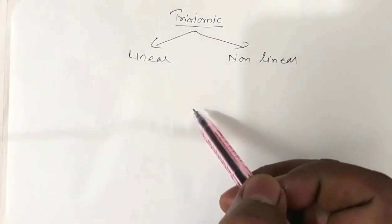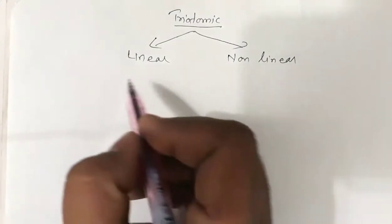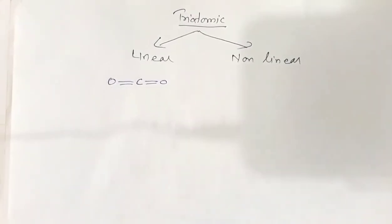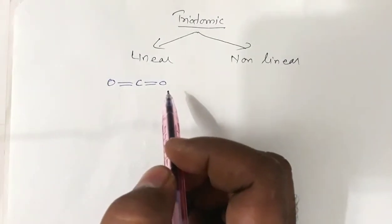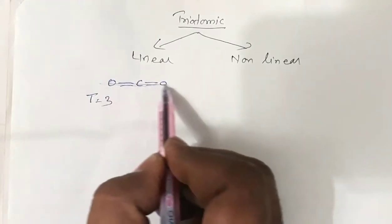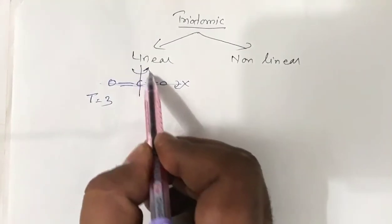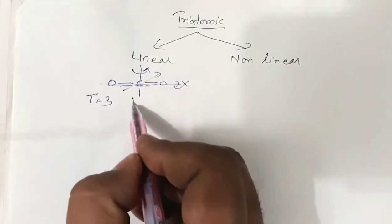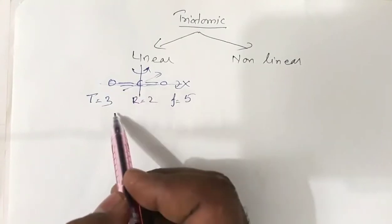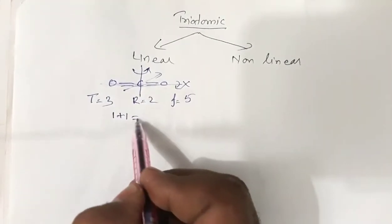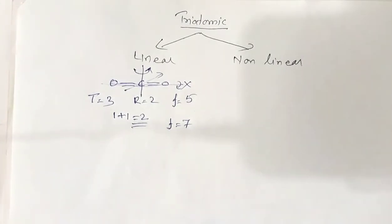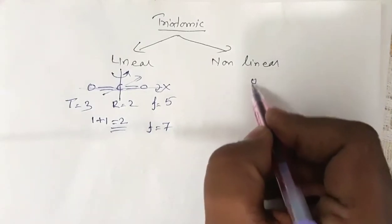Next, let's see the triatomic gas molecule — two cases: the linear triatomic molecule and the non-linear triatomic molecule. For a linear molecule like CO₂, translation gives three degrees of freedom. For rotation, the rotation along the molecular axis is neglected, so you have rotation about two mutually perpendicular axes — two additional degrees of freedom, giving five total at normal temperature. At higher temperature, vibrational potential and kinetic energy each add one degree of freedom, giving seven degrees of freedom.